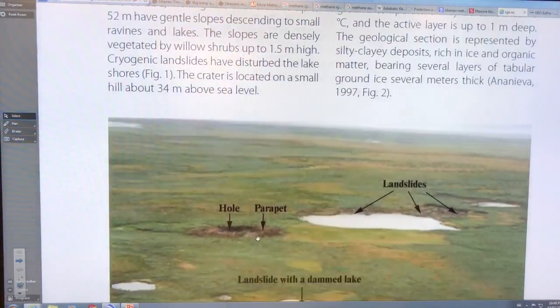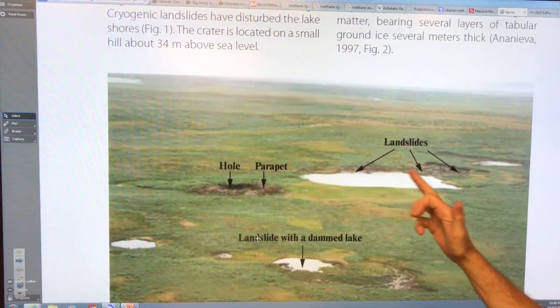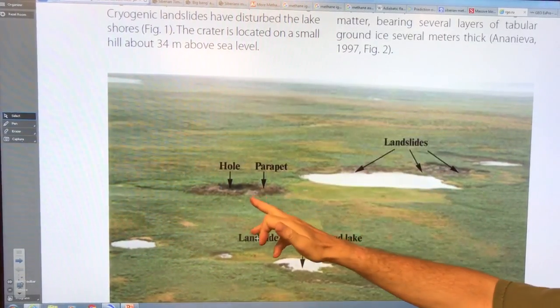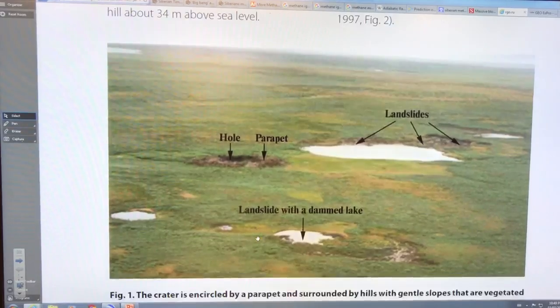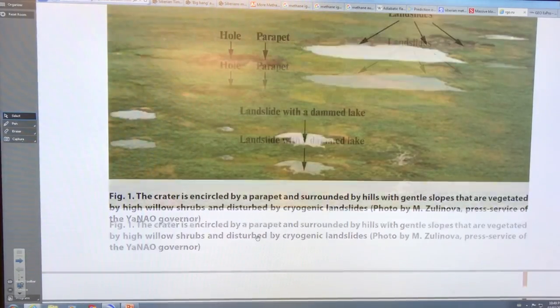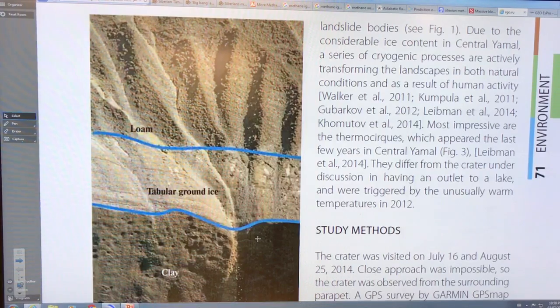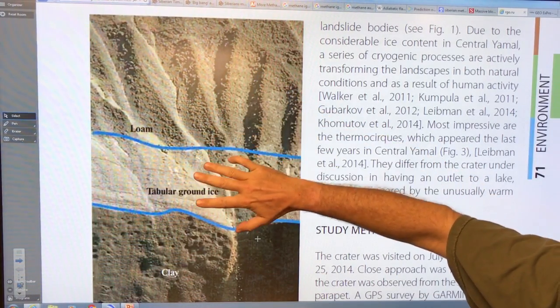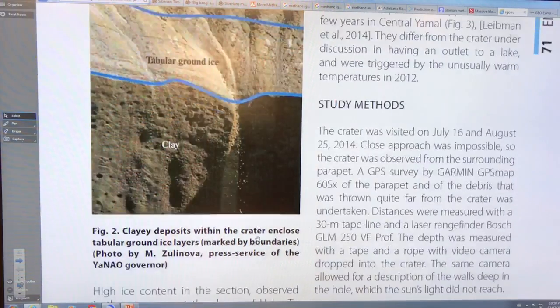So here is there's a lake here and there's landslides on the surface of the lake. There is a hole here and then around it, they call it the parapet. So this crater, gentle slopes. If you go inside the crater, there's loams, there's ground ice and then there's clays. There's different materials in the crater.